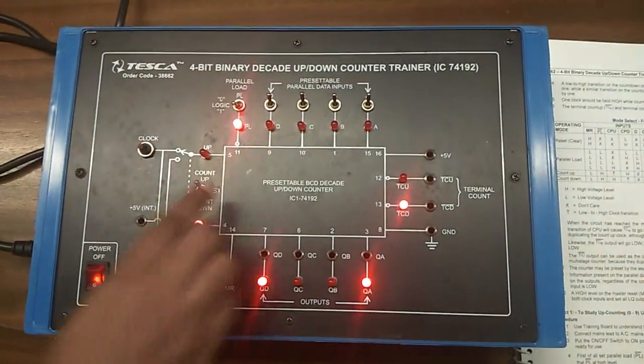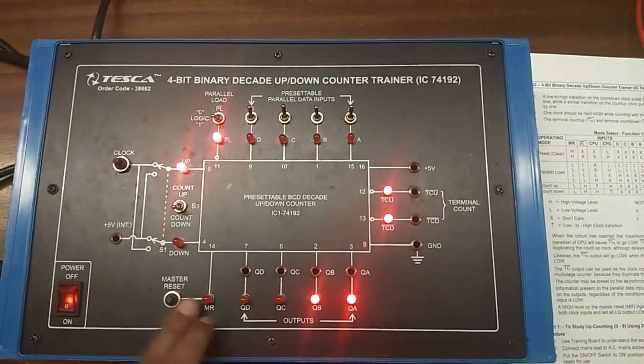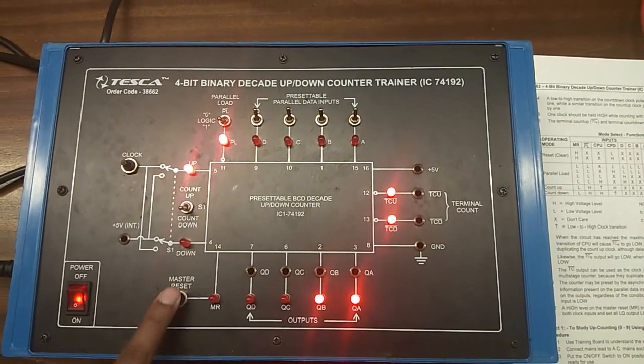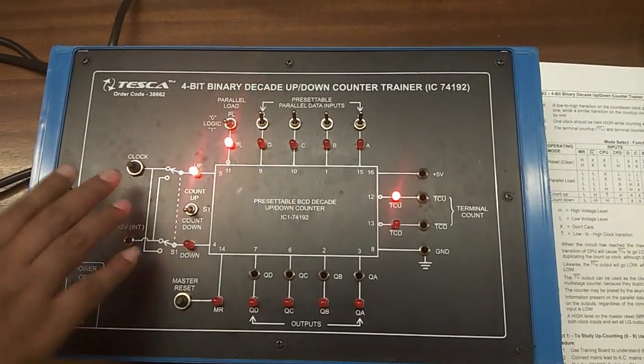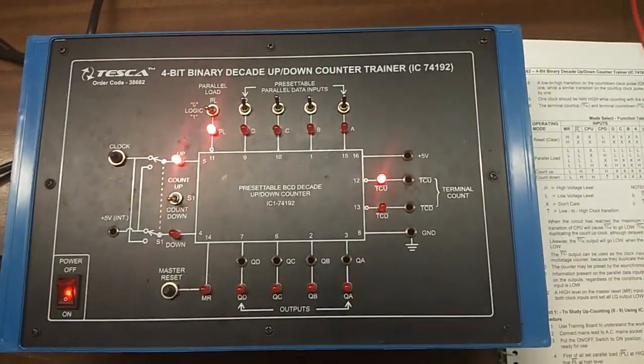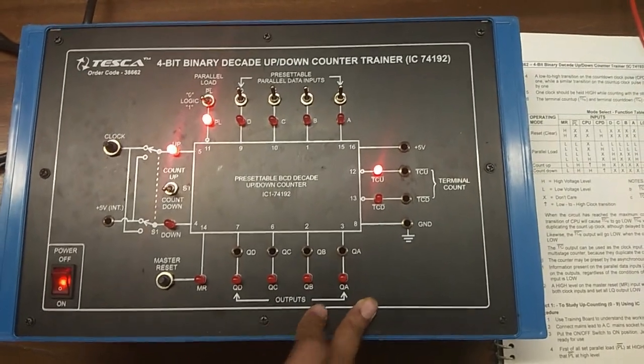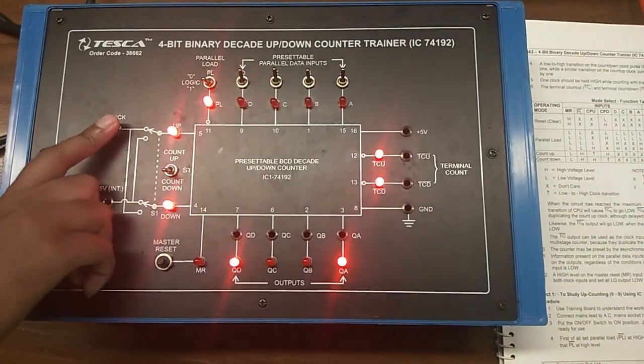For countdown counter, select the switch in countdown position. This is master reset switch. Reset clears all the data and now we will start countdown. When the circuit reaches minimum count state, this LED will go off.